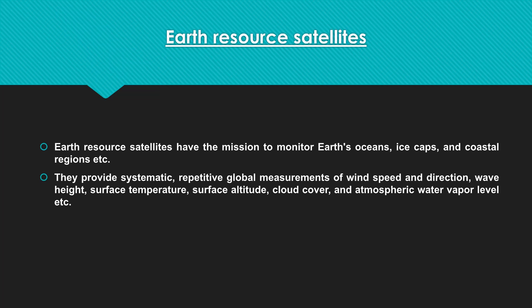Earth resource satellites provide systematic data including global measurement of wind speed and direction, repetitive wave height, surface temperature, surface altitude, cloud cover, and atmospheric water vapor levels. Meteorological satellites, on the other hand, provide data for climate and are also known as climatological satellites.